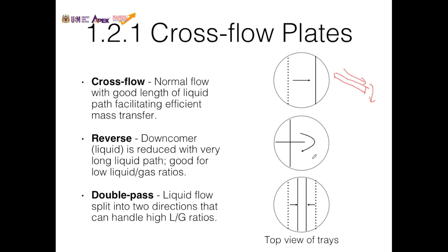For reverse flow, the liquid flows from one section, moves around a baffle to a lower section. This increases the path length, giving a longer time to transfer gas into the liquid. The tray cells have holes so gas flows upward, and the longer path length due to the baffle increases mass transfer. The downcomer liquid is reduced because there is less rapid downward movement of liquid to the next tray.